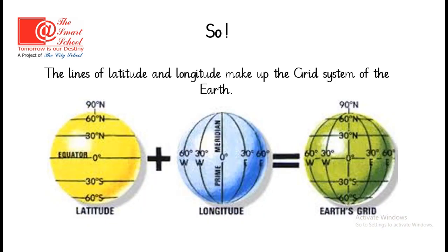What we conclude is that the lines of latitude and longitude make up the grid system of the earth. These are the lines of latitude and these are the lines of longitude. Together, both these lines make up the earth's grid. We will discuss in detail in the next lesson about the grid lines and the grid references.